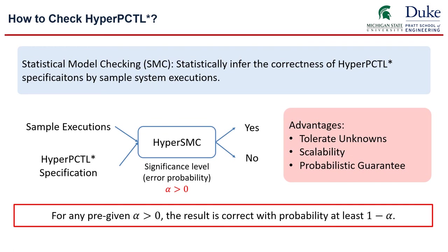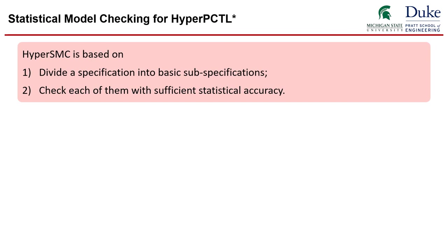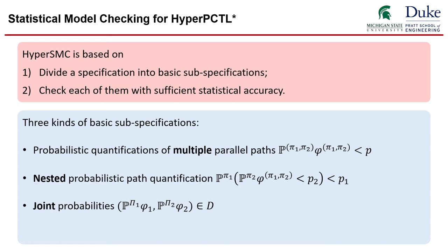Our statistical model checking technique has three advantages. First, it is a model free method, and therefore, it can tolerate unknowns from the underlying model and also scales well when the model becomes complex. And also, on the other hand, it provides a probabilistic guarantee on the result. And this is sufficient for most applications. More specifically, hyper SMC verifies a specification following the following two steps. First, it will divide a specification into a set of subspecifications using the syntax and semantics of the logic. Then it will use statistical inference techniques to infer the correctness of each subspecification smartly with sufficient statistical accuracy.